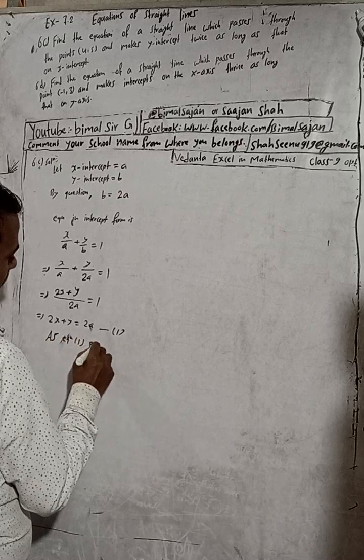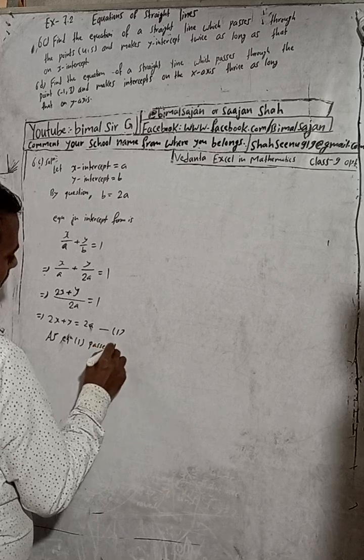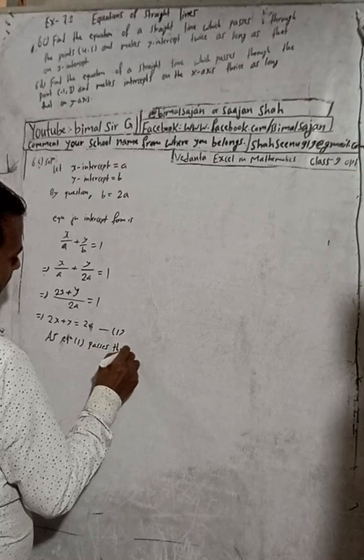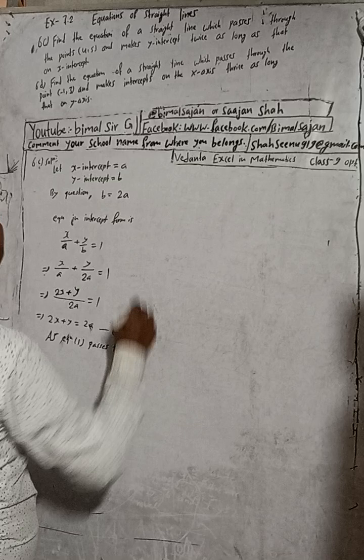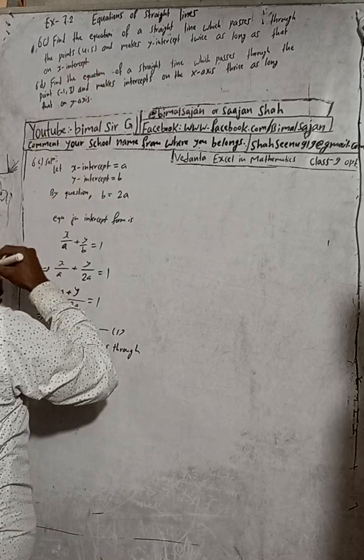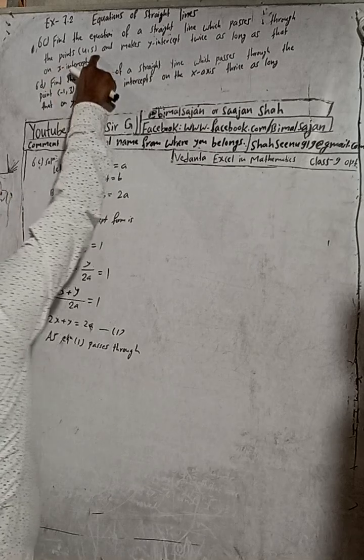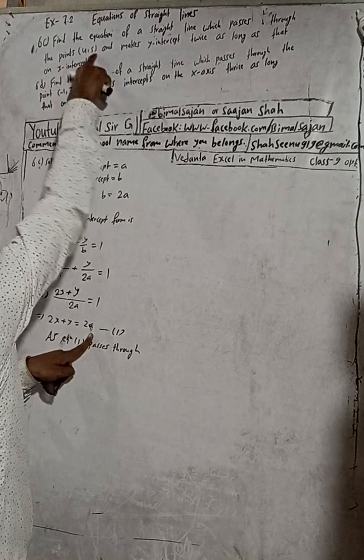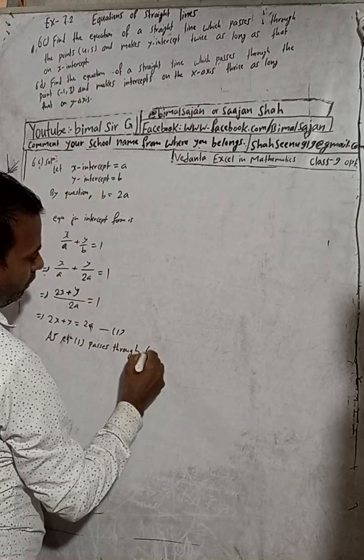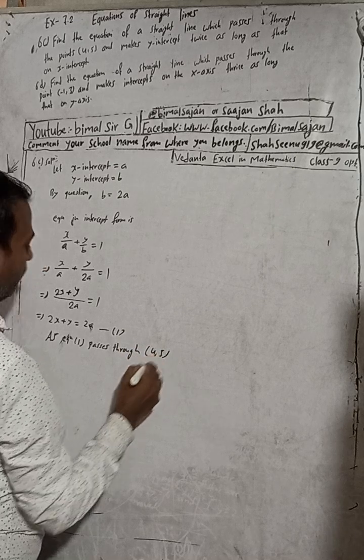As equation 1 passes through, here the equation 6C which passes through the point (4,5). Passes through (4,5).